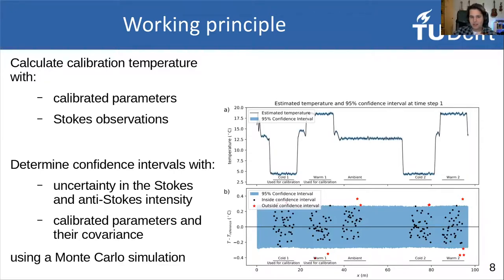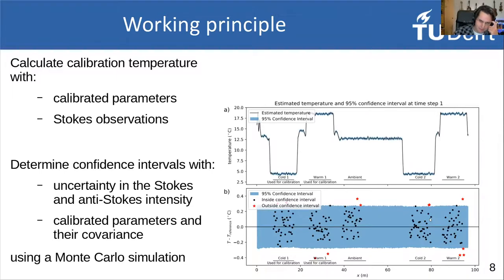On the right, you see an example from our paper showing an entire temperature trace over 100 meters with two baths used for calibration and an ambient section. The estimated temperatures are shown as a black line and the blue shows the confidence interval, which is actually quite small compared to the jumps in temperature. At the bottom you can see the comparison to each reference section, and it fits very well — about 95% of the data points in the calibration and reference paths fall within this 95% confidence interval. You can use this confidence interval data and uncertainty in other analyses, for example when comparing with models to see how much they are in agreement.